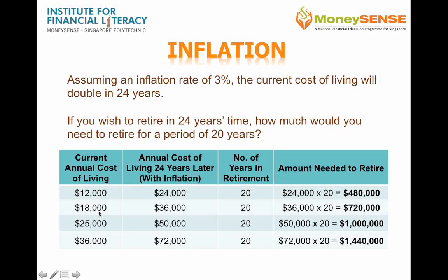Now, let's say the annual cost of living is now $18,000. In 24 years' time, with the effects of inflation, the annual cost of living will increase to $36,000. And assuming you need to accumulate 20 years of savings for retirement, you would need $36,000 times 20, approximately $720,000 at the point of your retirement.